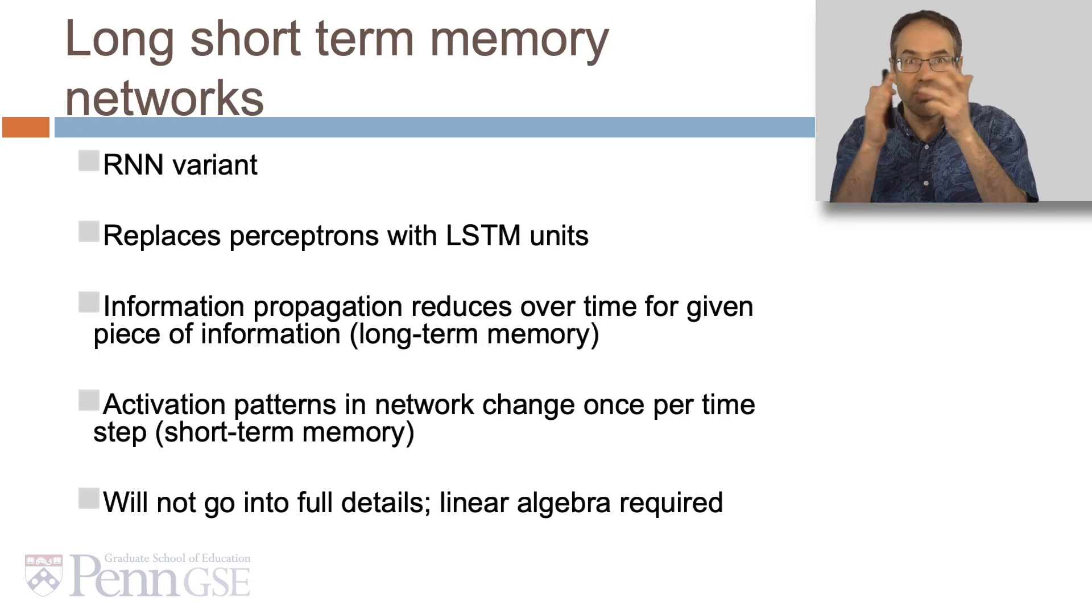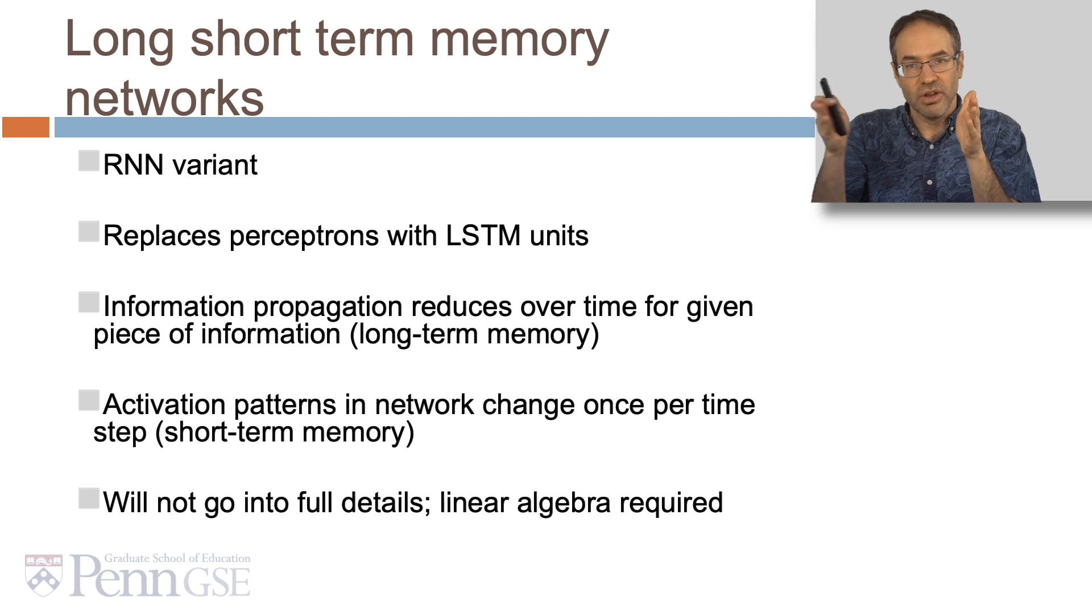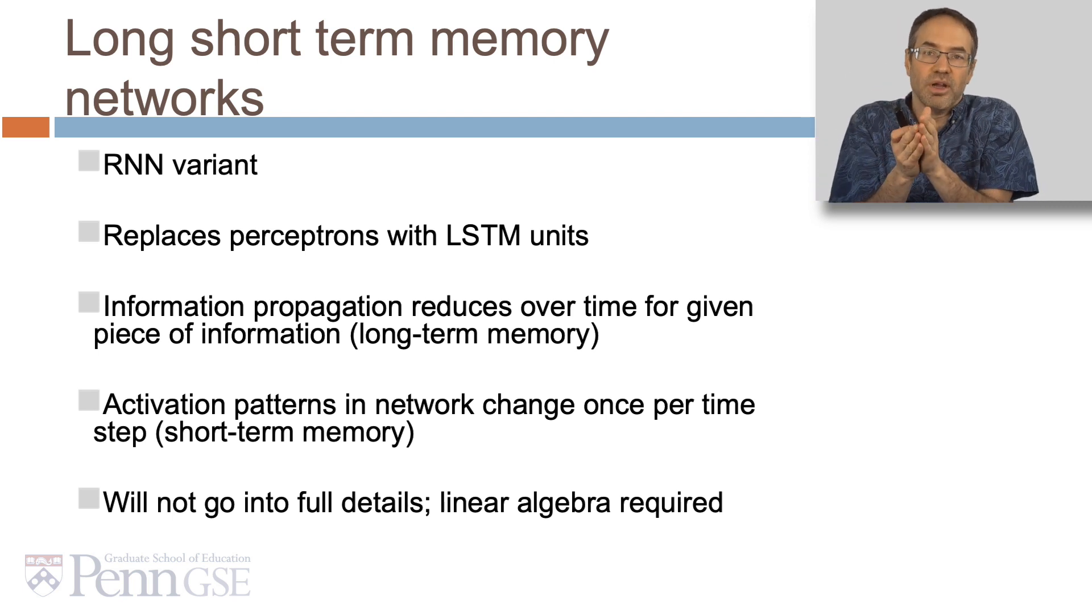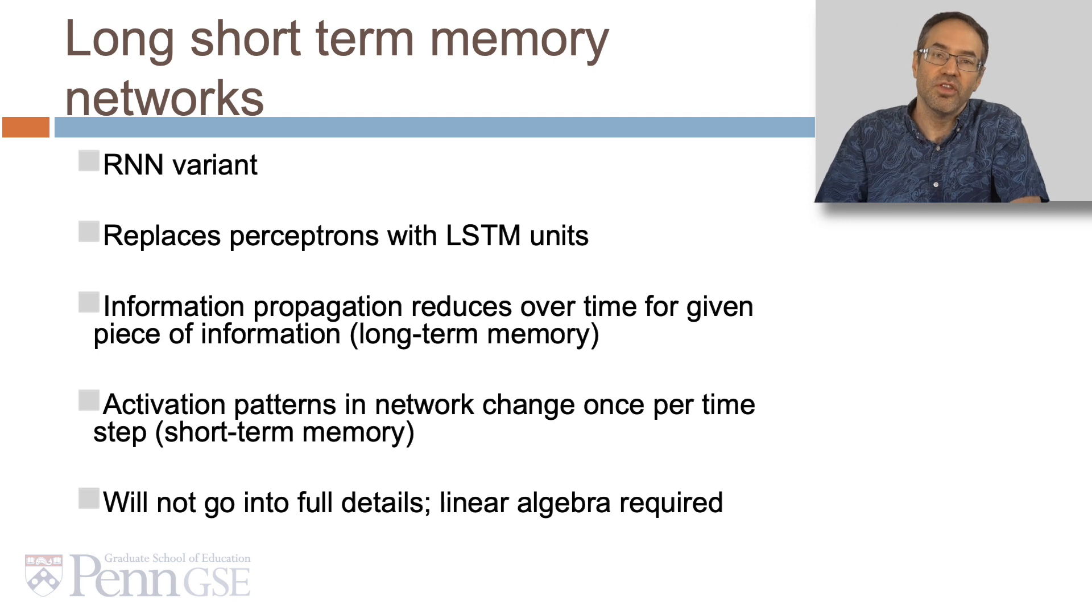But it gets more complex. Long short-term memory networks are a variant of RNNs that replace perceptrons with what are called LSTM units. LSTM units have what's called a long-term memory, because they reduce information propagation over time for a given piece of information, but they still keep it. But they have a short-term memory, inasmuch as the activation patterns in the network, the values coming out of each perceptron, change once per time step.